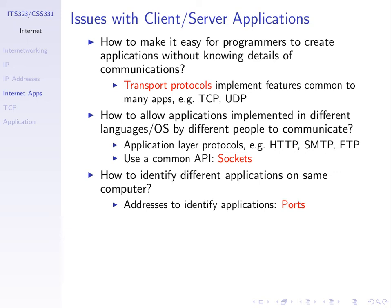Rather than the application programmer having to implement retransmission in their own application, it's offloaded to a separate protocol — a transport protocol. TCP in particular does reliability. The application doesn't have to worry about implementing ARQ, stop-and-wait, go-back-N, or selective reject. Instead, TCP implements that for the application. Your application simply sends the data using TCP. We use transport protocols to support common features that many applications need.